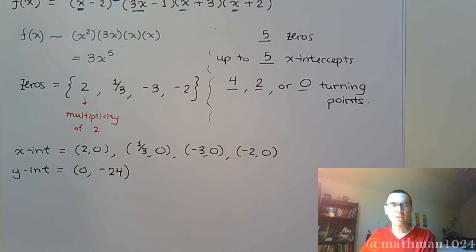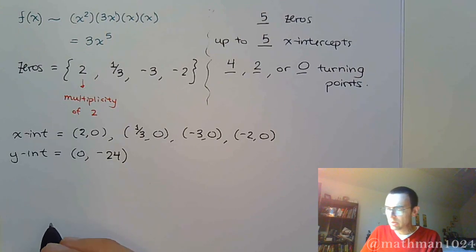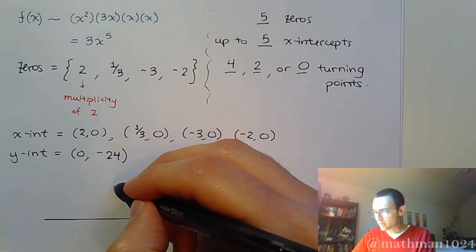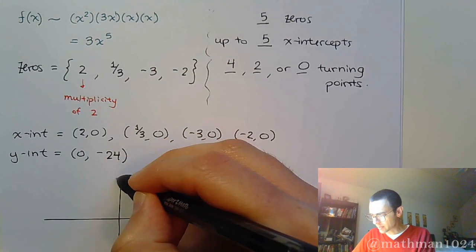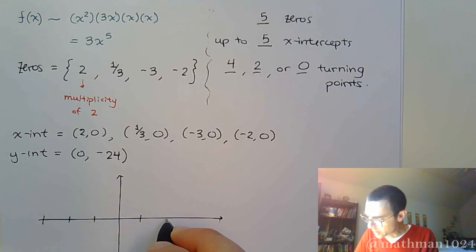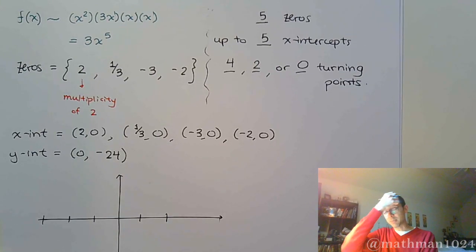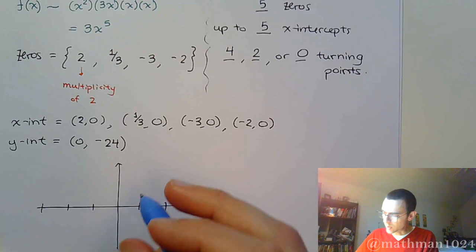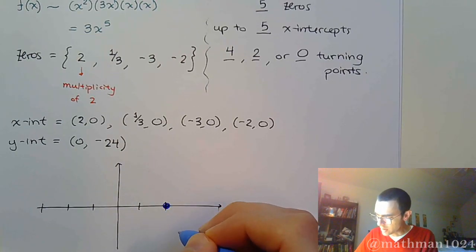And now we're going to put everything together and try to come up with a reasonable estimate for our graph. All right, so we've got negative 2 and negative 3, and we go all the way out to positive 2 like this. All right, so let's put our x-intercepts in place. All right, so we have (2, 0) right here.